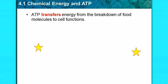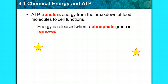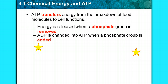So exactly how does that work? The energy is released when a phosphate group is removed. Then ADP — adenosine diphosphate, which only has two phosphates — is changed into ATP when a phosphate group gets added.